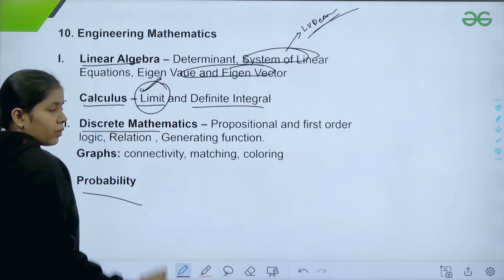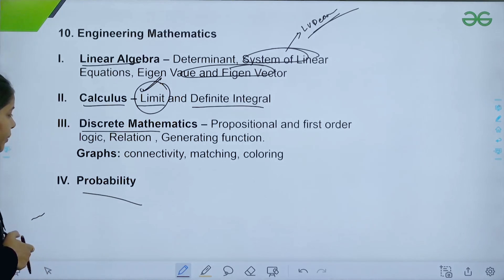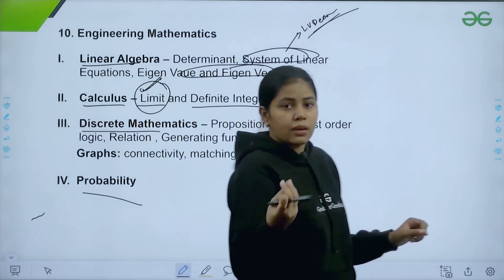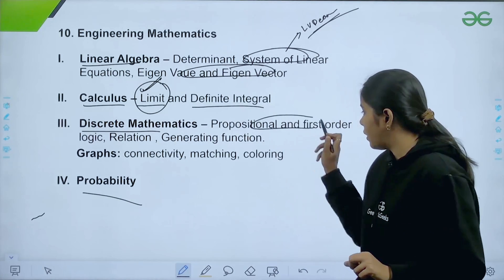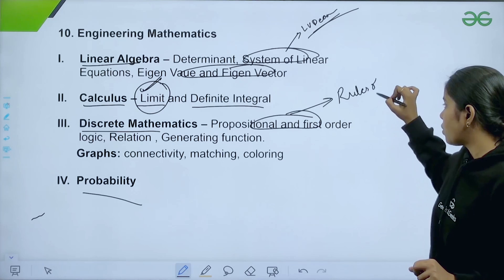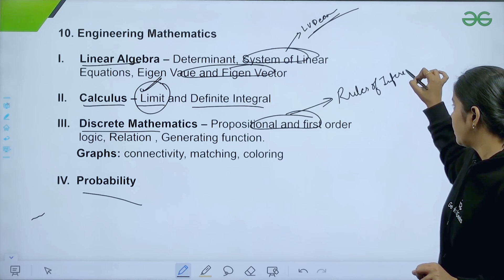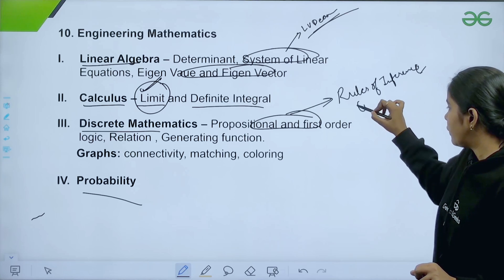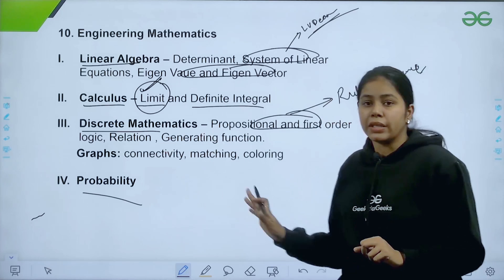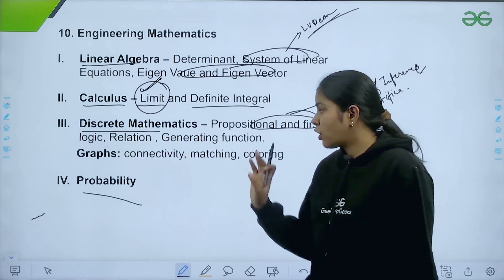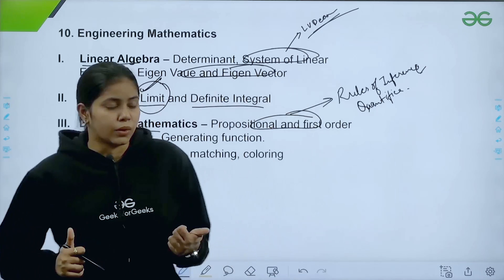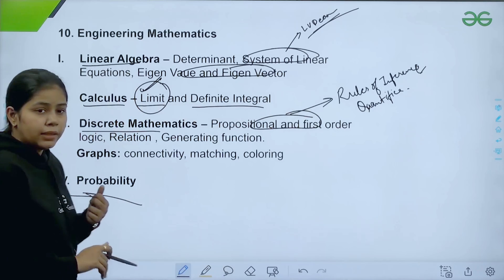In discrete mathematics, propositional and first-order logic is important. Specifically, rules of inference and quantifiers are two very important sub-topics. Additionally, relations and generating functions are important topics. In graph theory within discrete mathematics, connectivity, matching, and coloring are the three important topics.